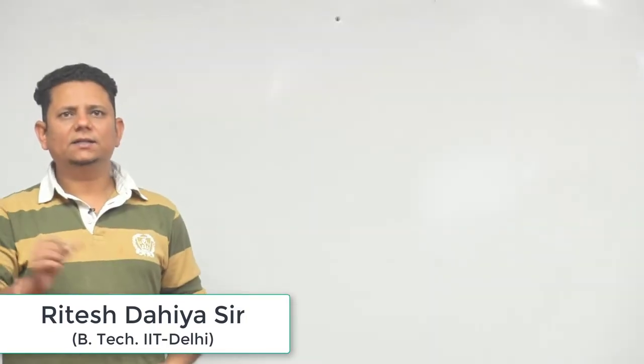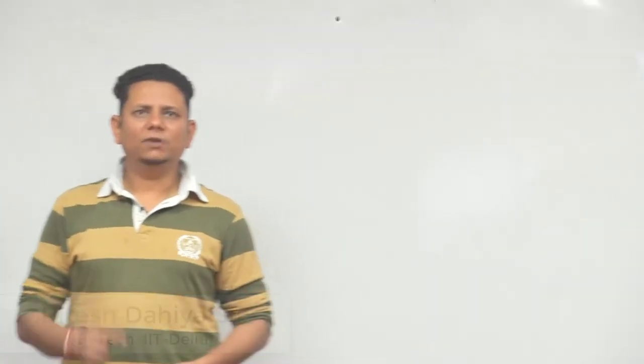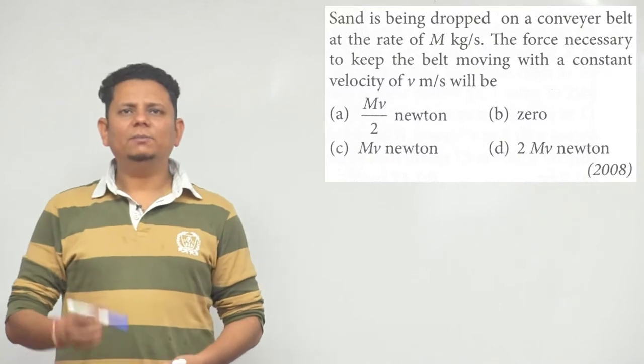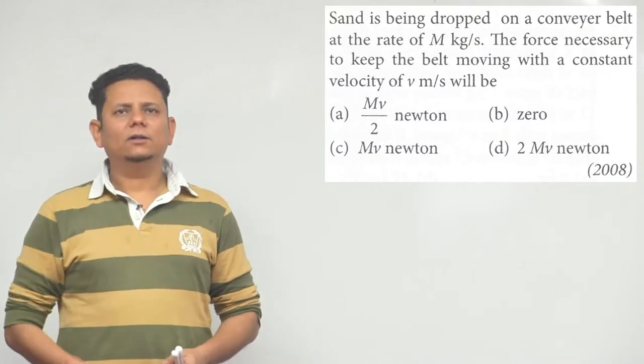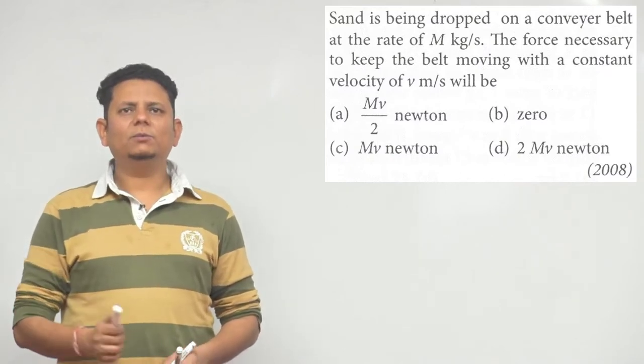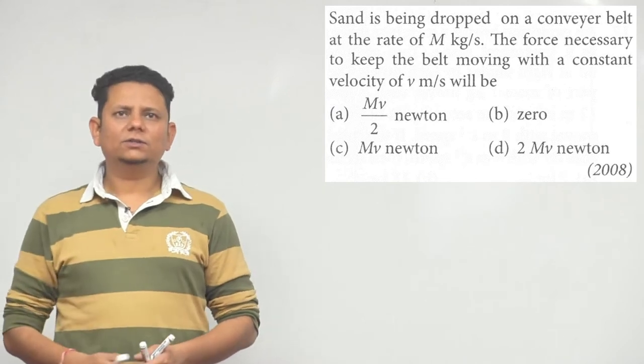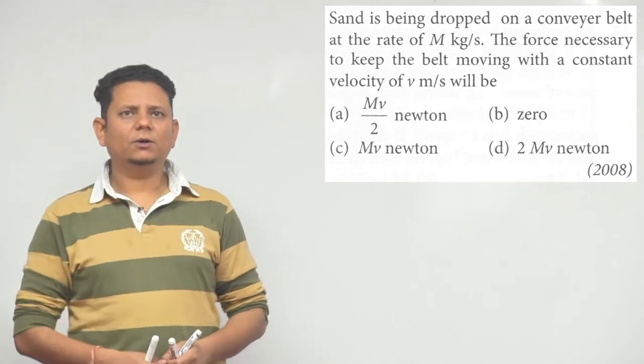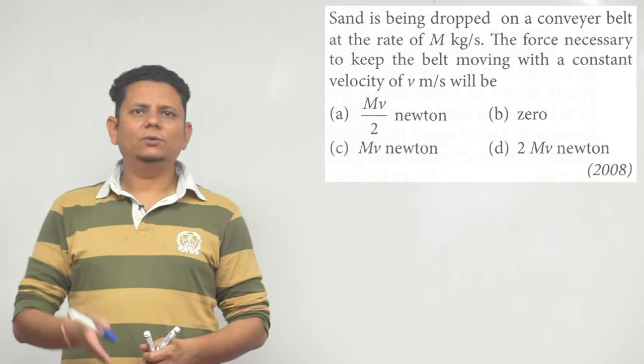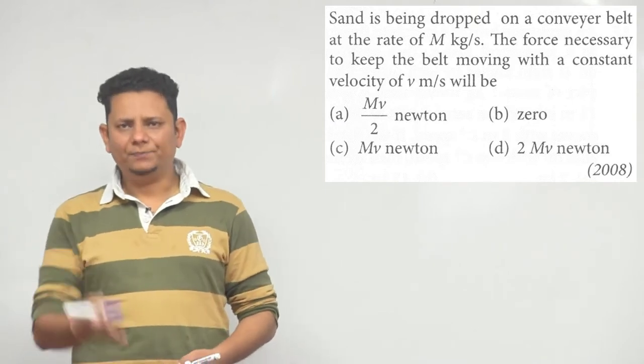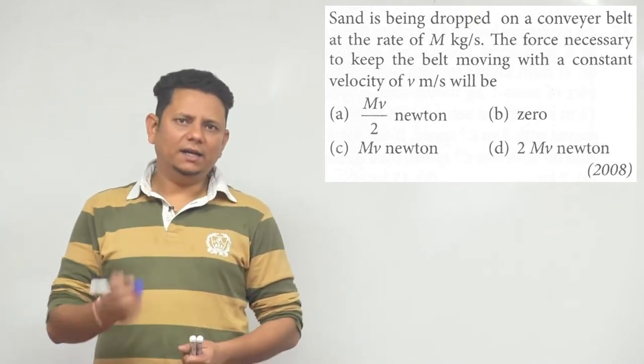The next question says: sand is being dropped on a conveyor belt at the rate of M kg/s. The force necessary to keep the belt moving with a constant velocity of v m/s will be. The options are: (a) Mv/2 newton, (b) zero, (c) Mv newton, (d) 2Mv newton. This is a variable mass question.